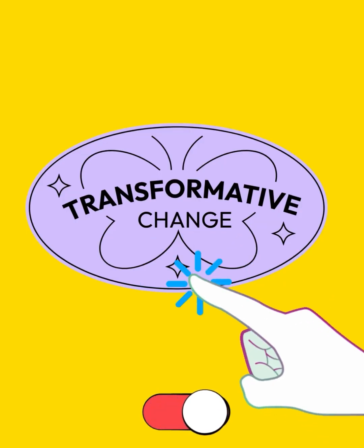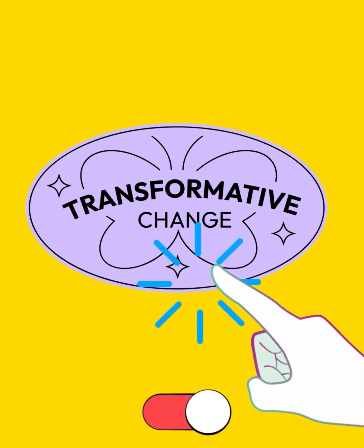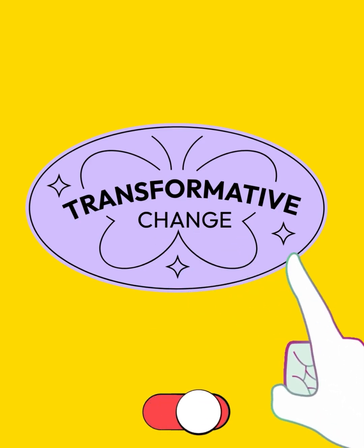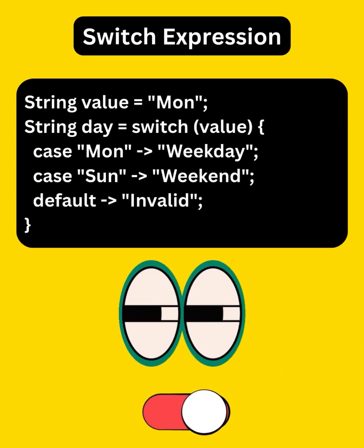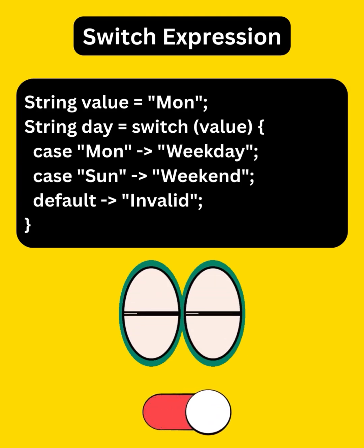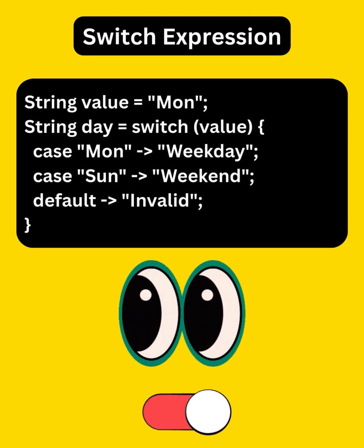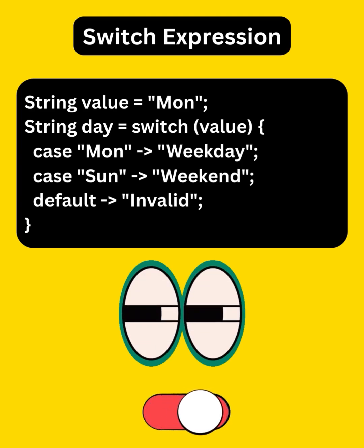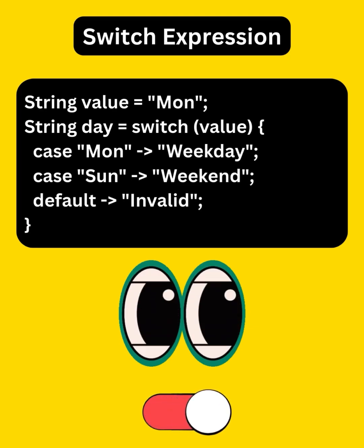Java 8 didn't change switch at all. But preview features started appearing in Java 12 and 13 and became permanent in Java 14. Now, just by replacing a colon with an arrow, we can convert a switch statement to a switch expression and return values directly from switch. This removes the need for break statements. A default case becomes mandatory now because a switch expression must be exhaustive and return a value for all inputs.